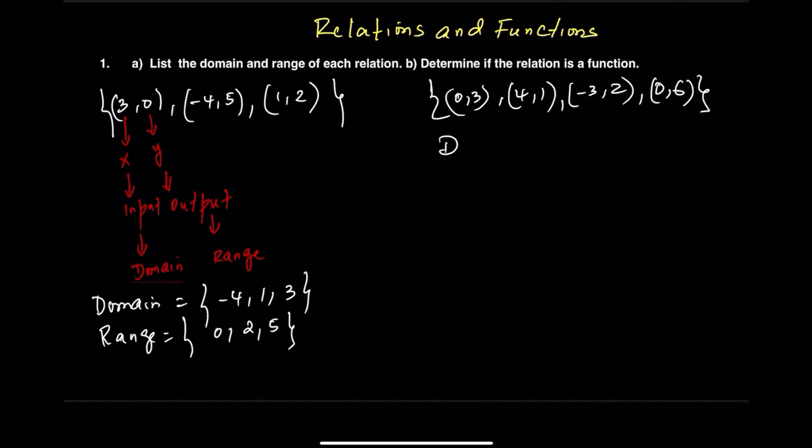Now looking at the second relation. The X values, or domain, are negative 3, 0, and 4. The Y values, or range, are 1, 2, 3, and 6.